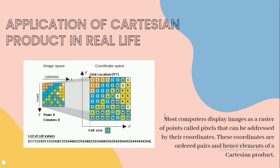For the application of Cartesian product in real life, most computers display images as a raster of points called pixels that can be addressed by their coordinates. These coordinates are ordered pairs and hence, elements of a Cartesian product.